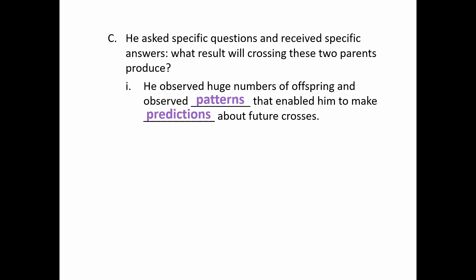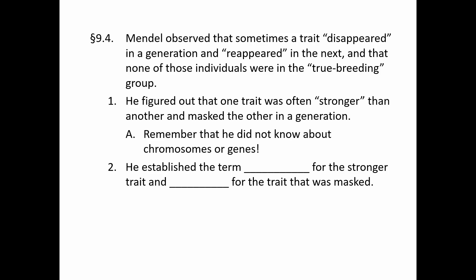When he did these experiments, we're talking about doing hundreds of plants, counting hundreds of seeds and counting their colors and shapes. He did this many, many times over. One of the things he noticed is that sometimes a trait would disappear in one generation only to reappear again in the next, and that those individuals were never in the true breeding group. So he figured out that one trait was somehow stronger and was able to mask the other trait in that generation.